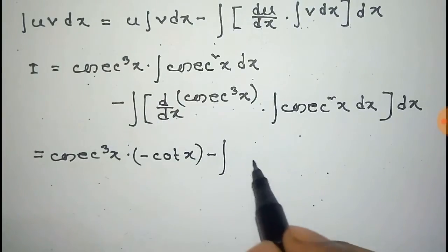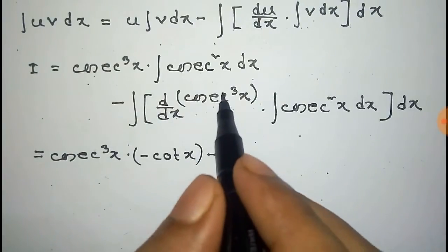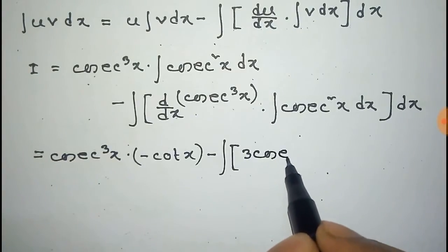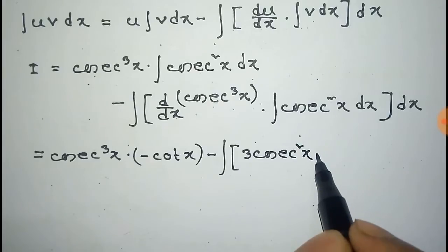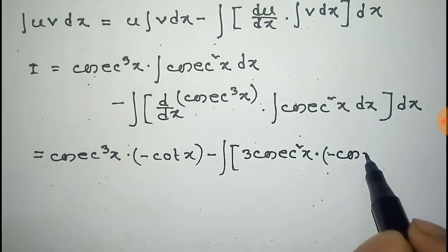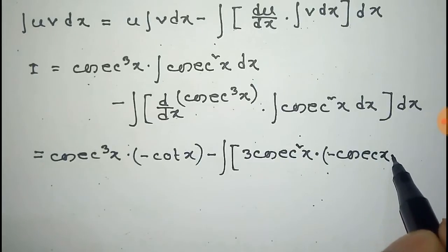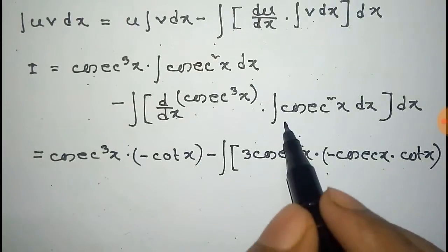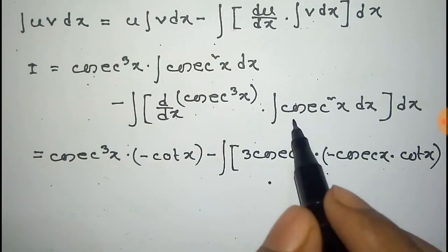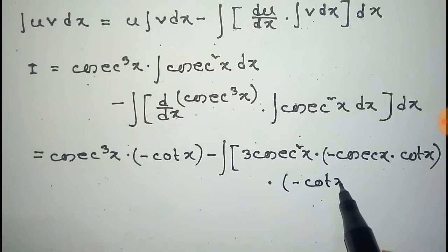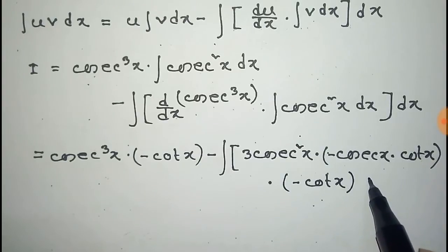This equals cosec cube x times the integration of cosec square x, which is minus cot x, minus the total integration where the derivative of cosec cube x is 3 cosec cube x times the integration of cosec square x, which is also minus cot x, into dx.